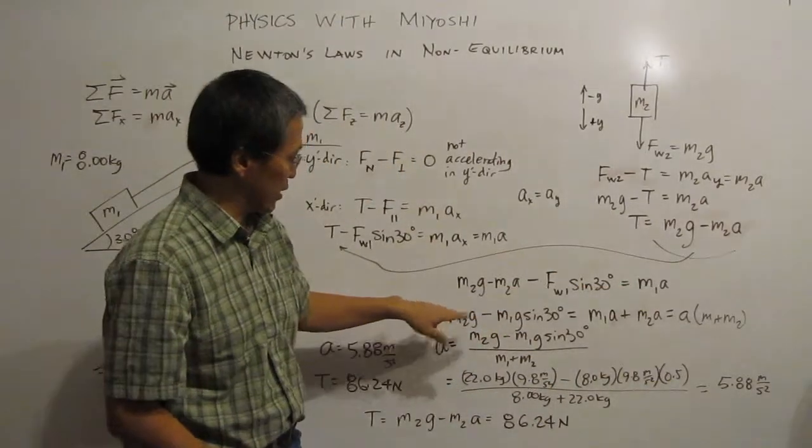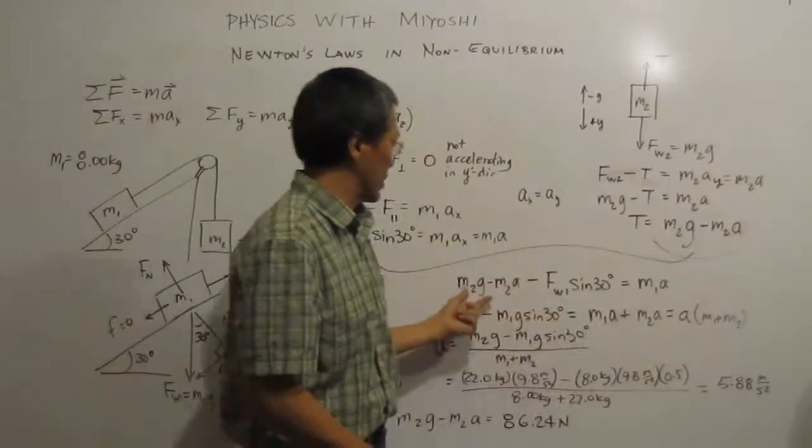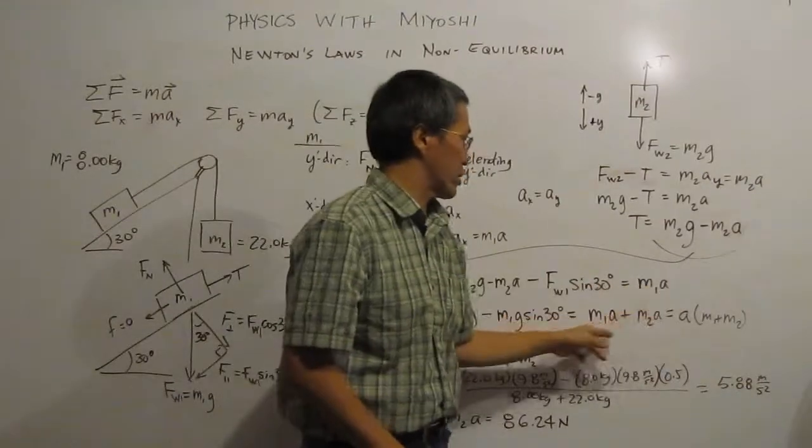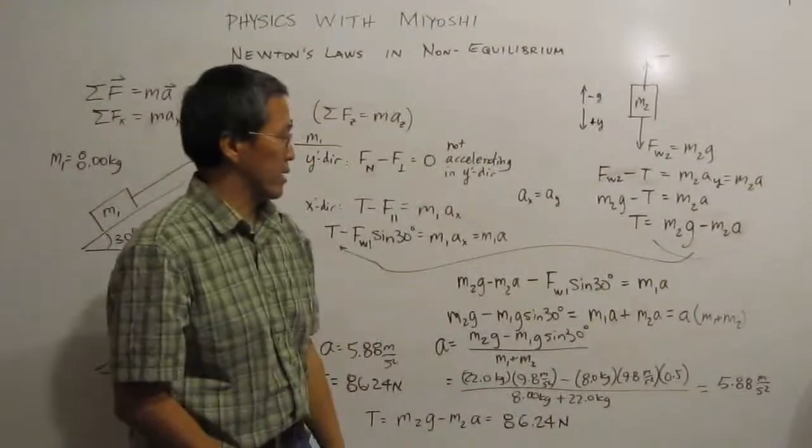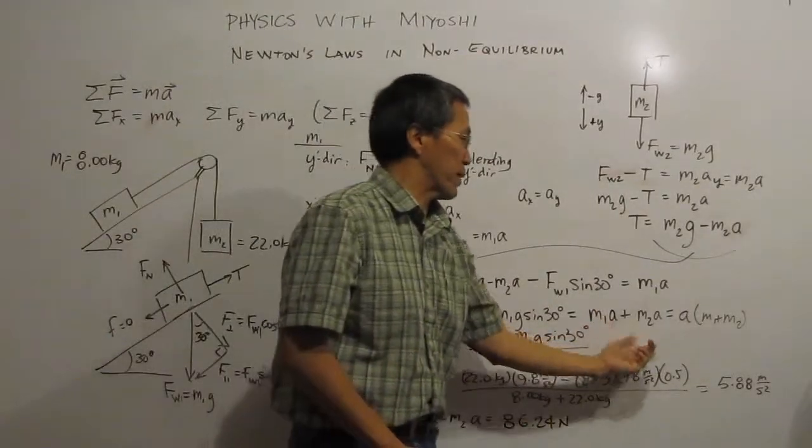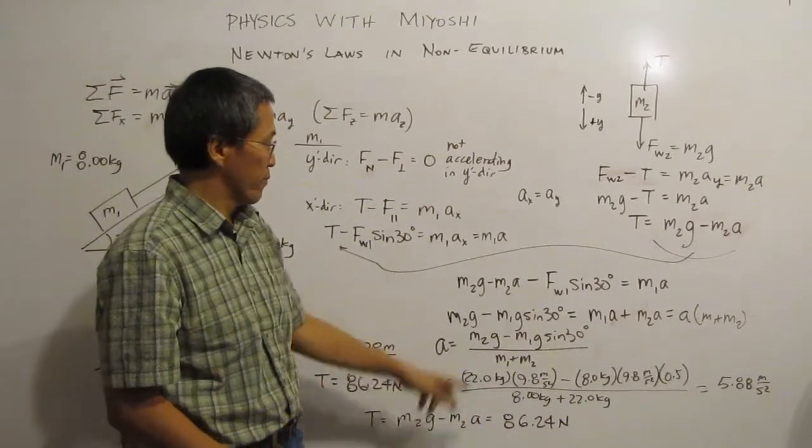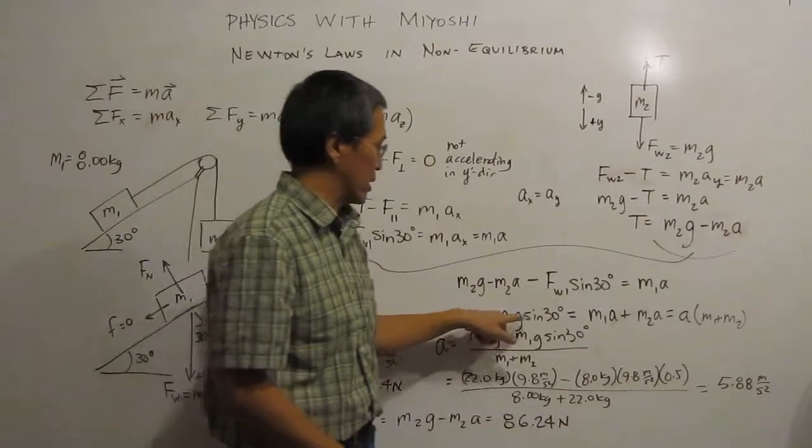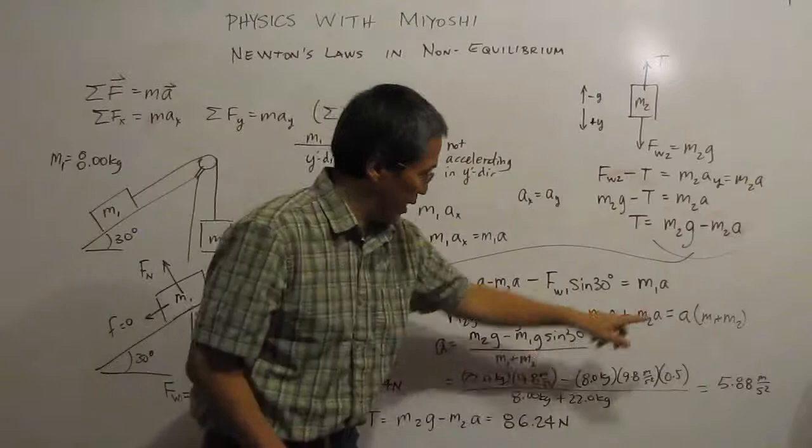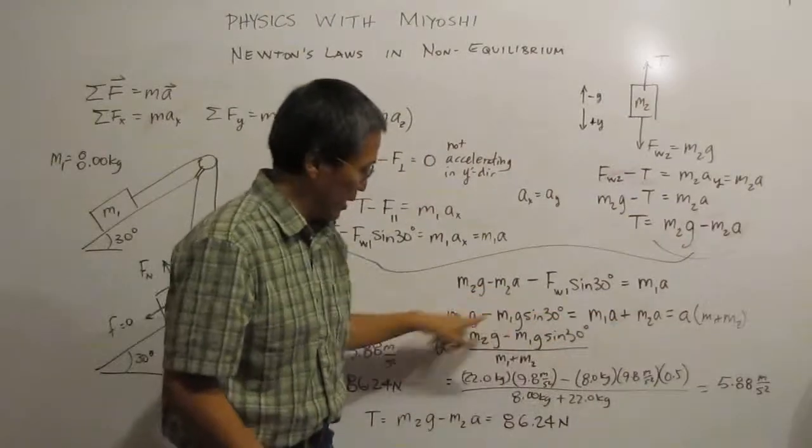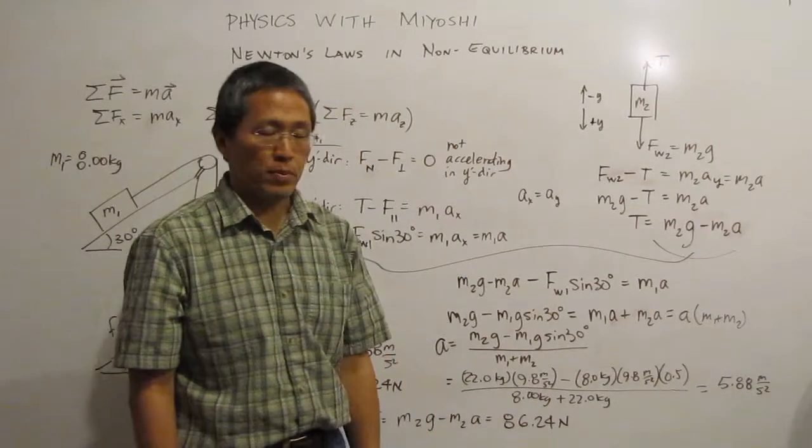I rearrange that equation a bit, so I have all the accelerations on one side. So I'll bring that acceleration over. So that's an addition on this side. Bring out the a, distributed property and do a times m1 plus m2. And then on this side, I have m2g minus m1g times sine of 30 degrees. And then we rearrange that to find a and we see that that's this big line equation. I plug in all the numbers and I get the acceleration 5.88 meters per second squared.